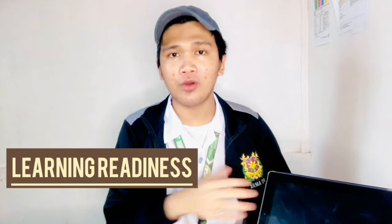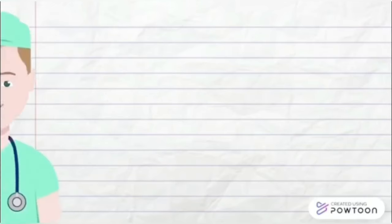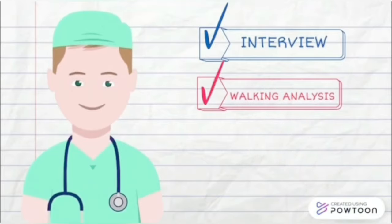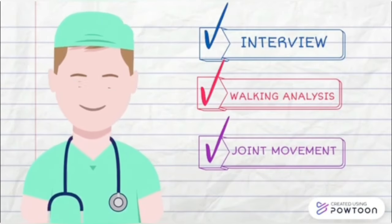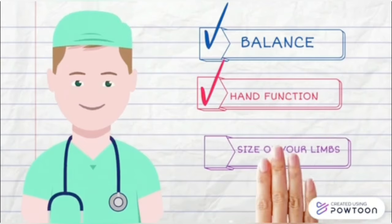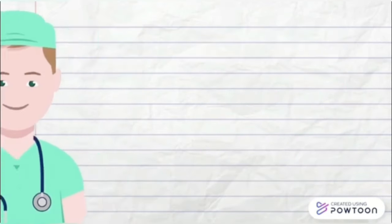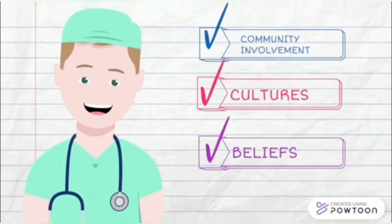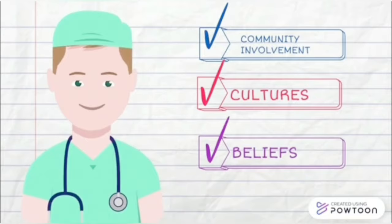In order for us to assess our patients' learning readiness for orthotic use, we must first determine their level of strengths and skills through history and systems review, observing their gait, walking speed and distance, measuring their joint ROM and muscle strength, assessing their balance, hand function, performing limb girth measurements, their level of community involvement, their cultural beliefs, their past experiences, and other factors that may hinder their active participation in orthotic training.